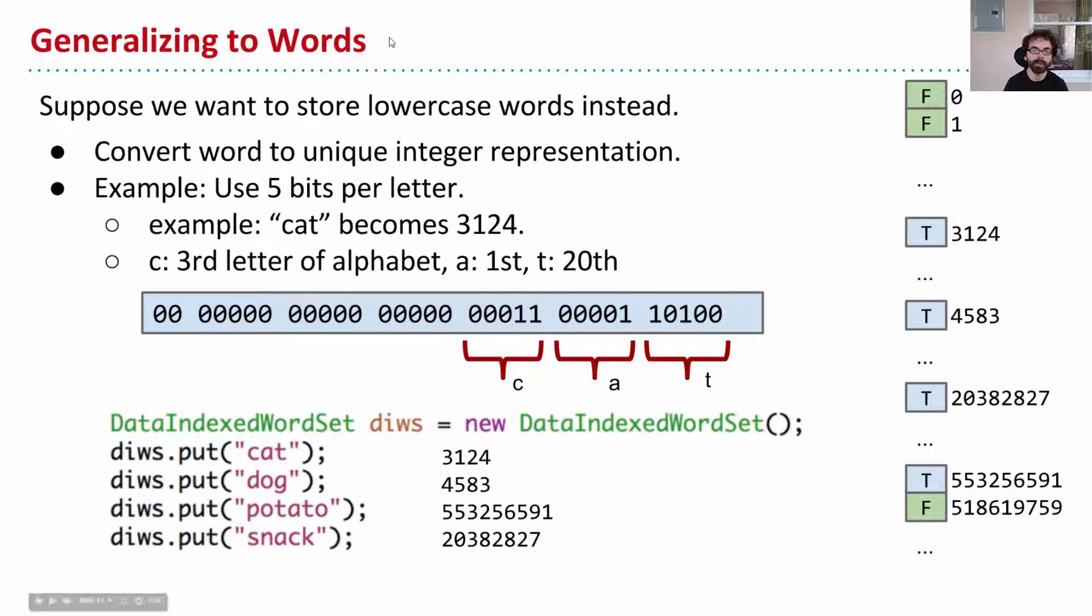So for example, suppose we want to store lowercase words instead of integers. What we could do is take any particular word and convert it to a unique integer representation. So for example, we could say the word cat. The word cat, we could just say, C is the third letter of the alphabet, A is the first letter of the alphabet, and T is the 20th letter of the alphabet. So in other words, here is C. And this is the number 3 in binary, 1 plus 2, 3. A is the first letter in the alphabet. T is the 20th letter in the alphabet. That's 16 plus 4. And so what I can do then is cram each letter. I'm kind of playing a trick. I'm just saying, I have a three-letter word, so I'll just use these five bits for the leftmost letter, the middle letter, the rightmost letter. And in a sense, then, I'm representing the word cat by this sequence of digits, which, as we saw in the previous slide, is just 3,124.